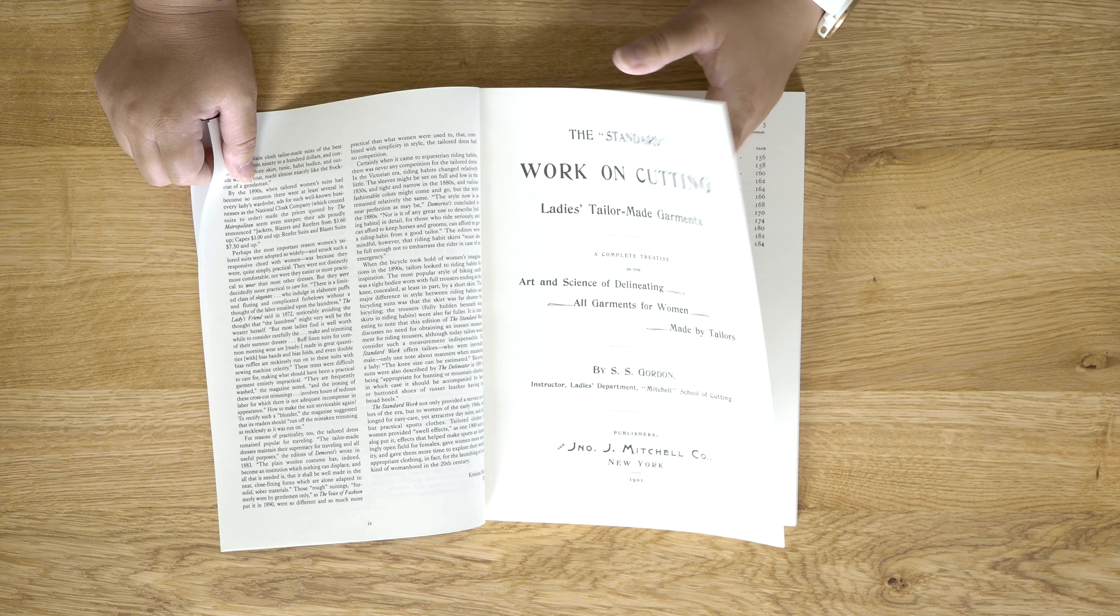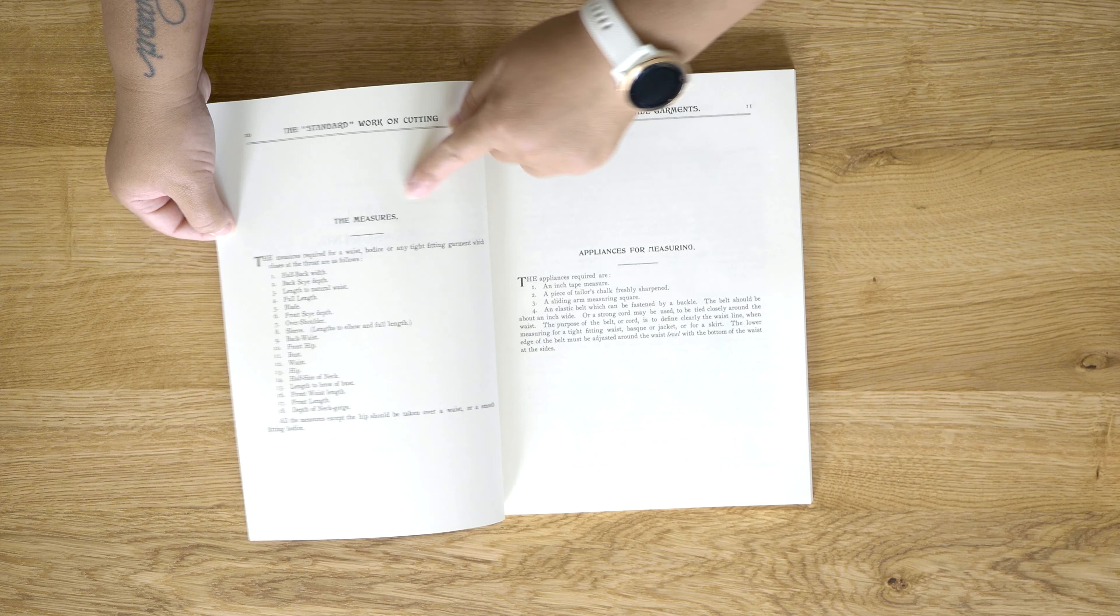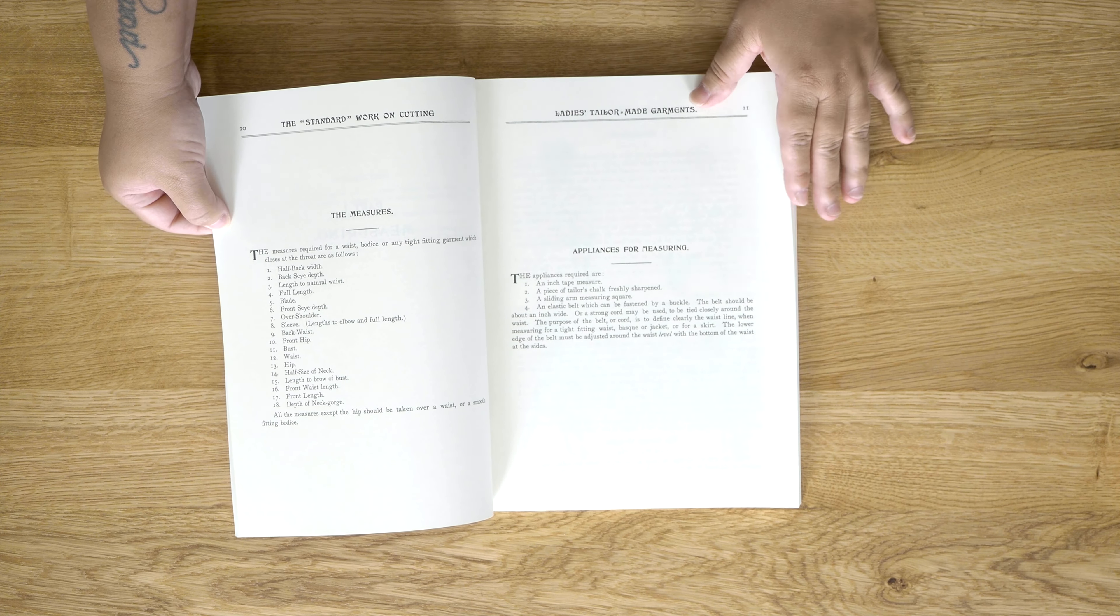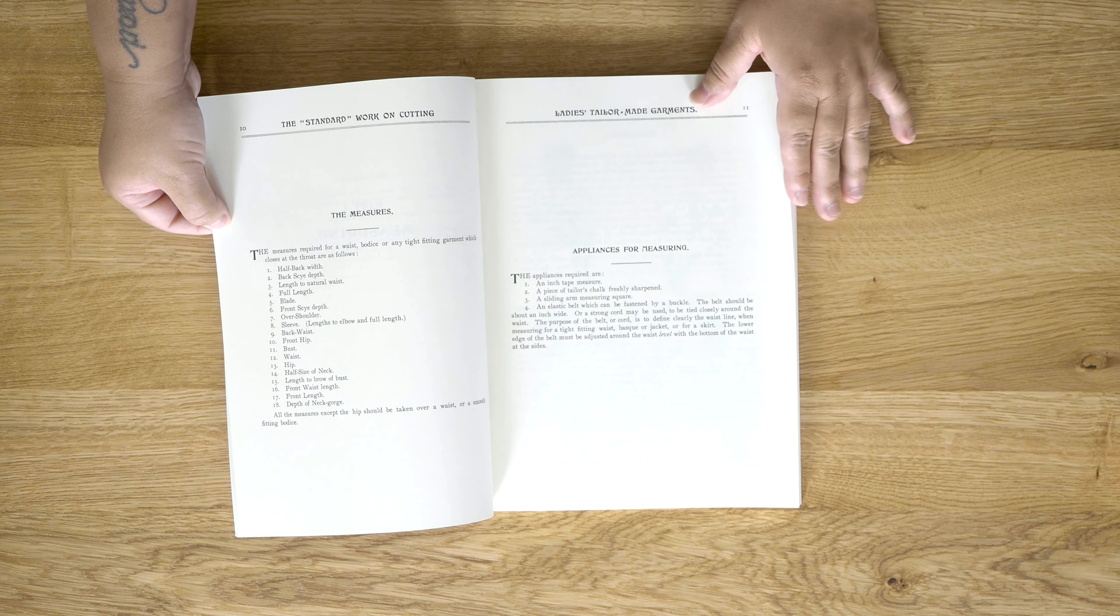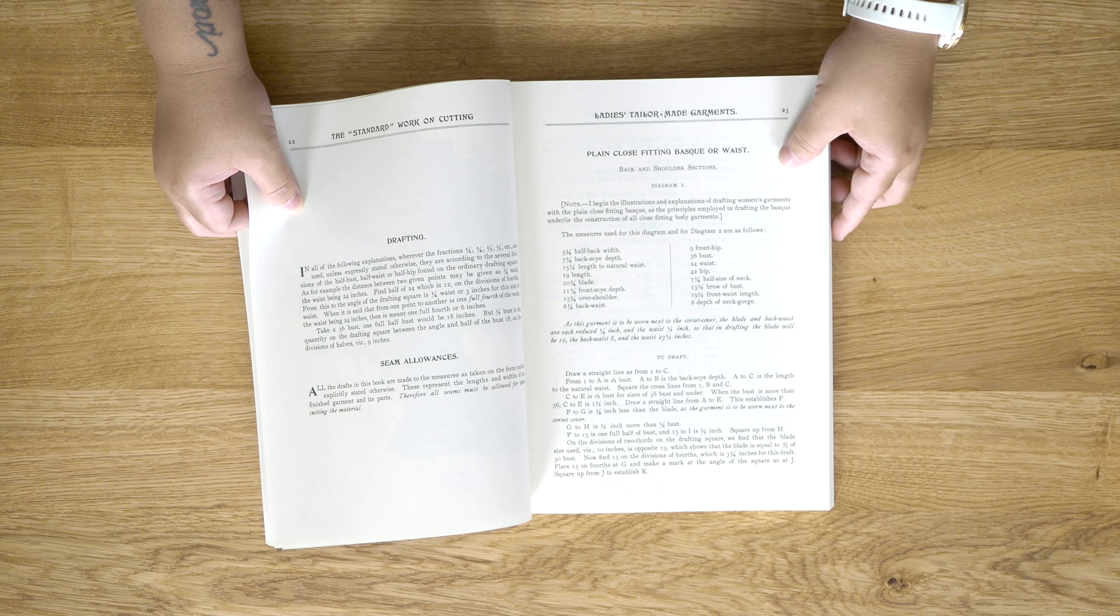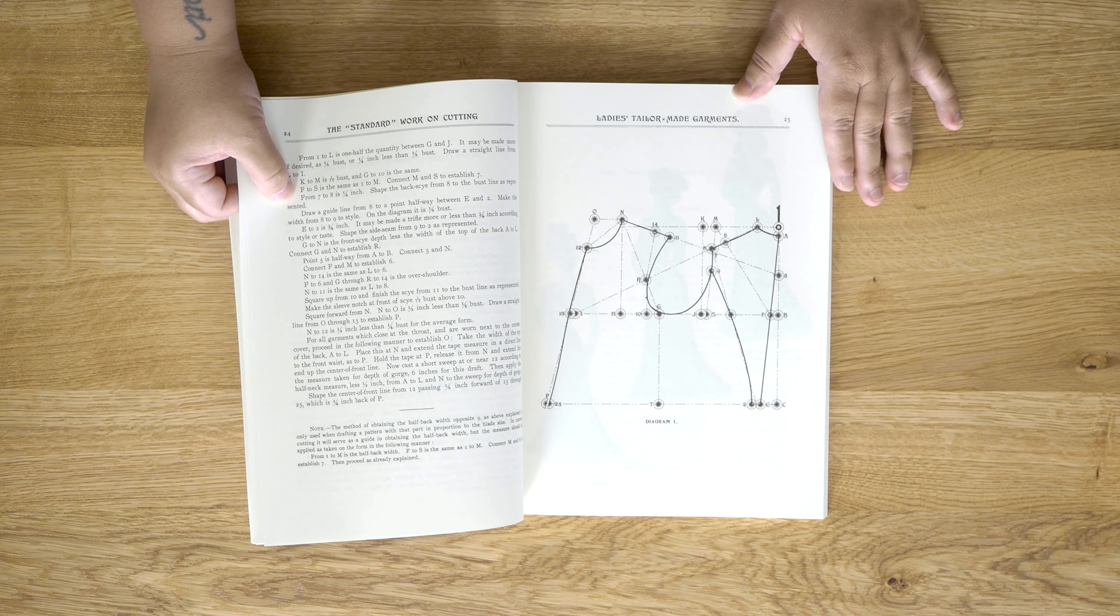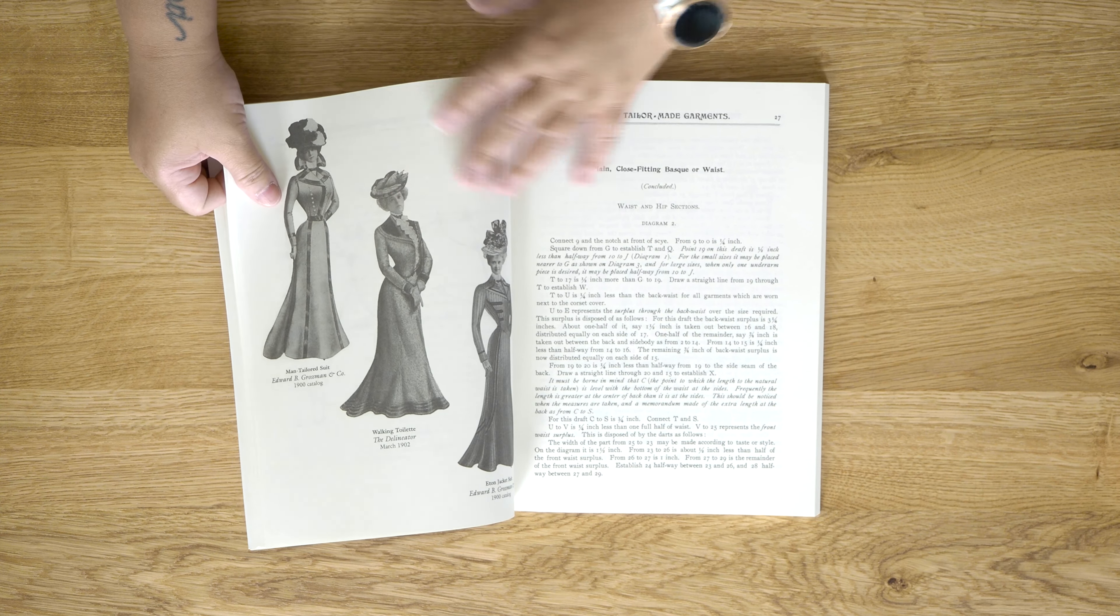Leaving The Voice of Fashion behind, we're going to move on to other types of cutting systems and drafting systems. This book, Turn of the Century Fashion Patterns and Tailoring Techniques, also by Christina Harris, is a reprint of a cutting system called The Standard Work on Cutting Ladies Tailor-Made Garments from 1901. Unlike the other books I've talked about, rather than using an apportioning system, this system actually uses body measurements to draft. So you do have to take a pretty good set of measurements.